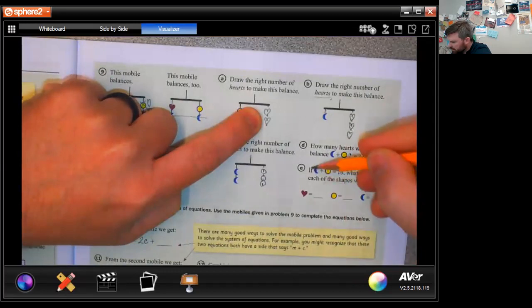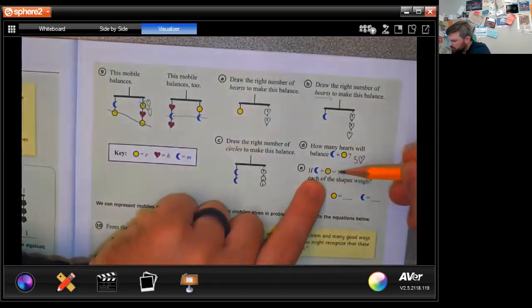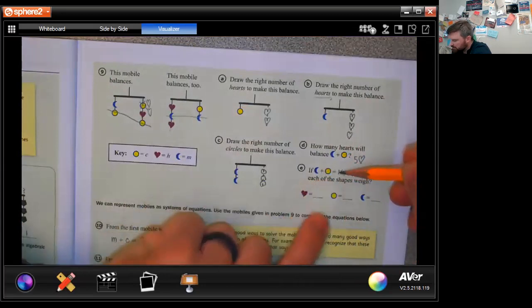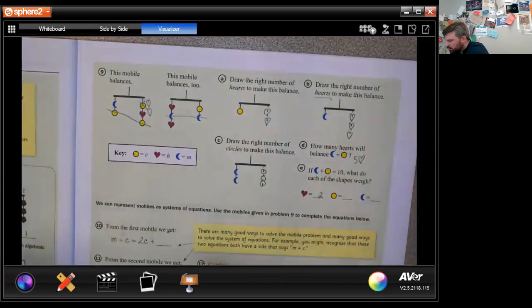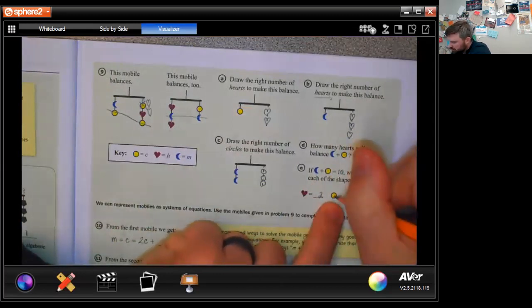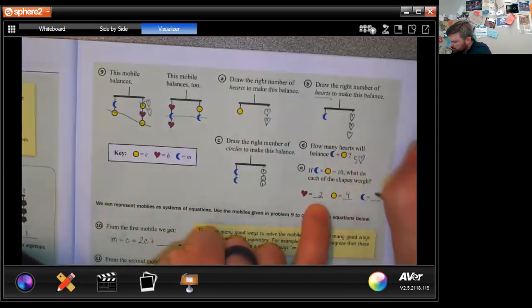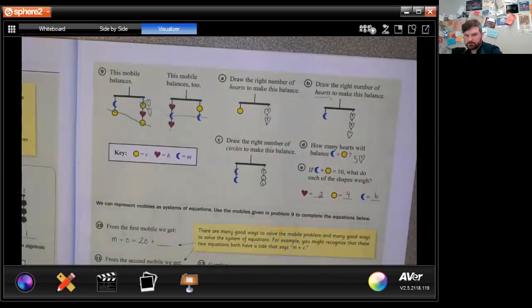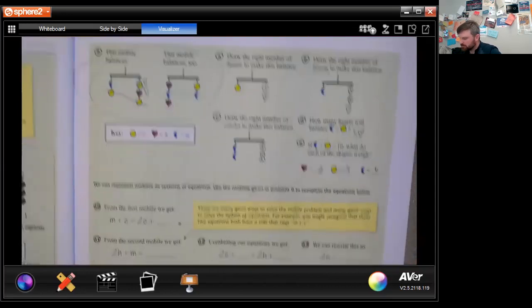If a moon plus a circle equals 10, what do each of the shapes weigh? Remember this equaled five hearts, so this is five hearts, so a heart must be two. A circle is two hearts, so two times two is four, and a moon is three hearts, so this would be six. All of that just came from these two little things right there.